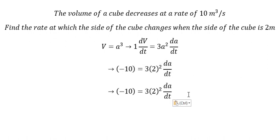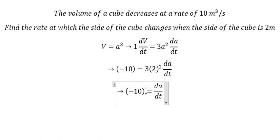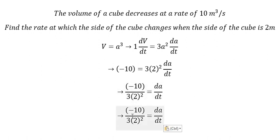Now we need to divide both sides by 3a². When we calculate this, we get negative 5/6 meters per second.